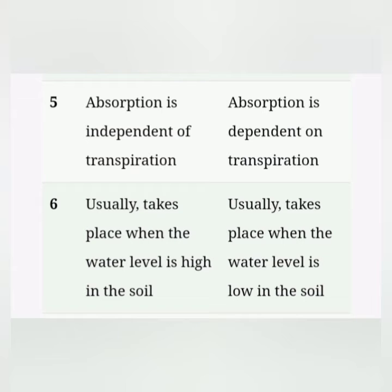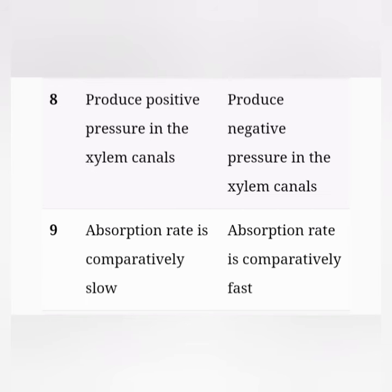Point number six: active absorption takes place when the water level is high in the soil; passive absorption usually takes place when the water level is low in the soil. Point number eight: active absorption produces positive pressure in the xylem canals, while passive absorption produces negative pressure in the xylem canals.